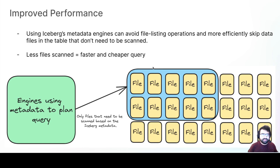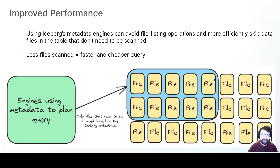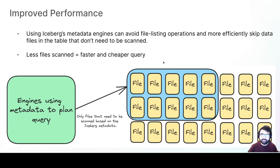Improved performance is another benefit because the engine uses the metadata to plan queries instead of doing file listing operations. It only scans the files it needs to scan — using partition stats at the manifest level and stats at the individual file level, it determines which files matter for a given query. The fewer files you scan, the faster and cheaper the query is, because you need less compute. You can shut down those instances much quicker, leading to cheaper queries and lower compute costs.